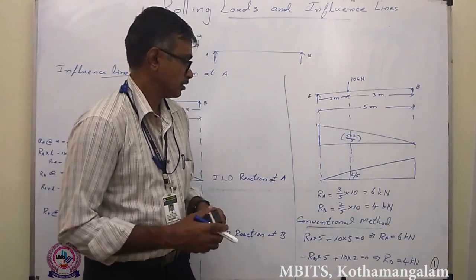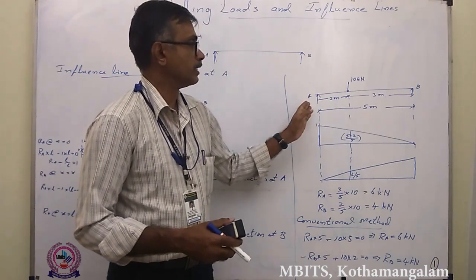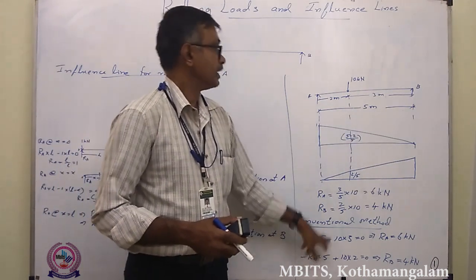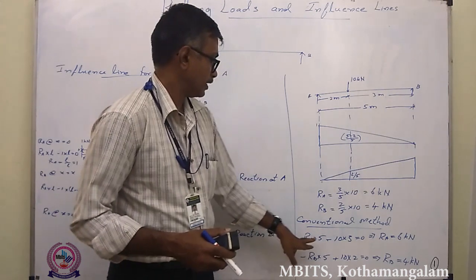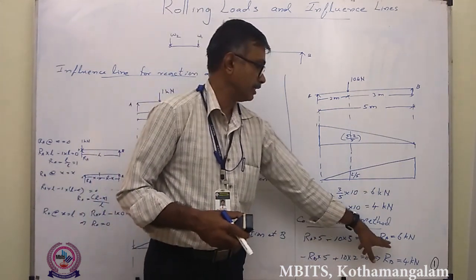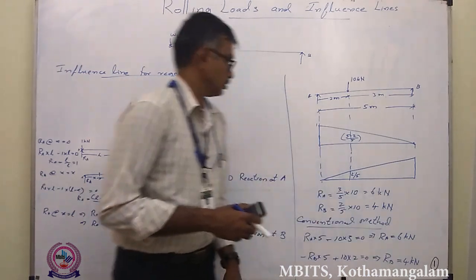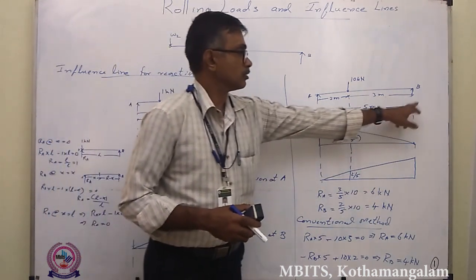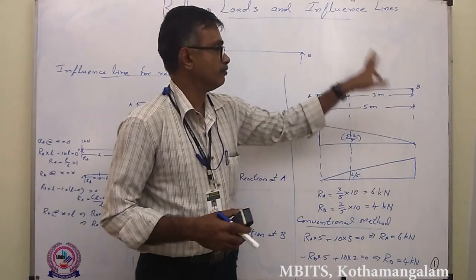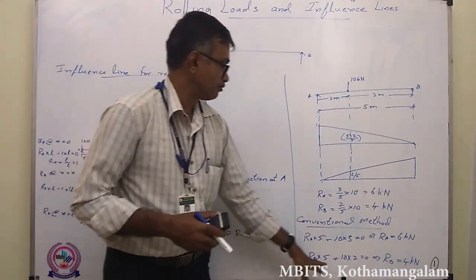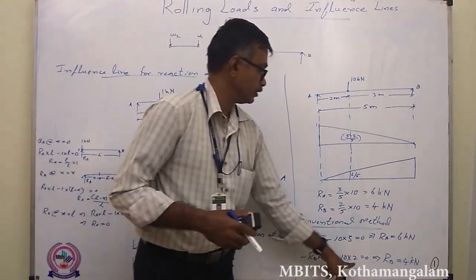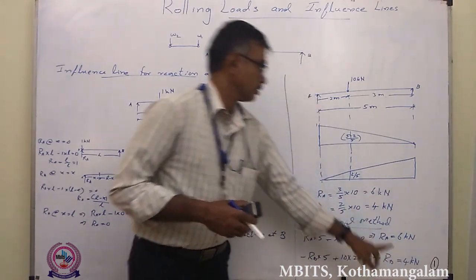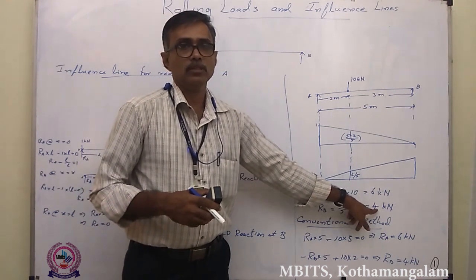We now verify using the conventional method. Taking moment about B: RA × 5 − 10 × 3 = 0, giving RA = 6 kN — matching the influence line result. Taking moment about A: RB × 5 − 10 × 2 = 0 (noting the anticlockwise sign convention), giving RB = 4 kN. This result is also validated.